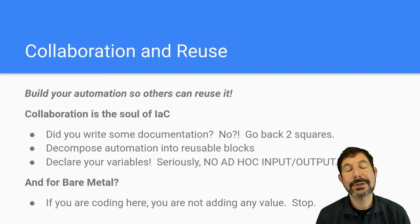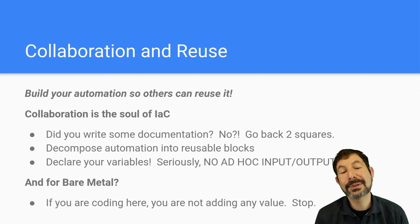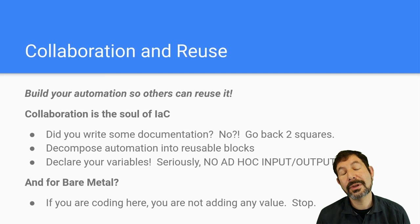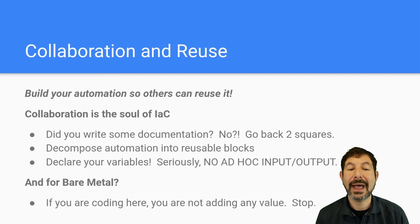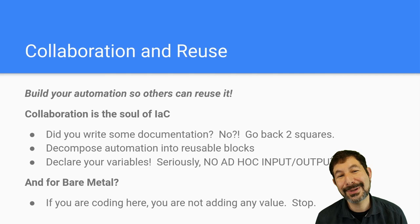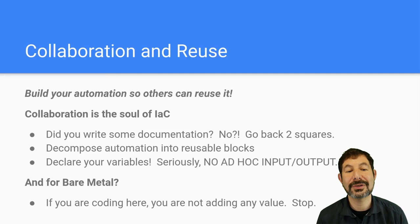Finally, and most importantly, when you're building these systems, build them in a collaborative way. Always build your automation so others can reuse it. If you're building automation that only you understand, then it's not actually automating a system — it's just saving you some work. The soul of infrastructure as code is collaboration. You need to be thinking through how you make this documented. If you haven't documented things, go document the work that you're doing — you must be doing documentation as close to the automation as possible.